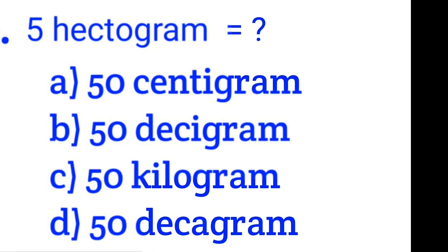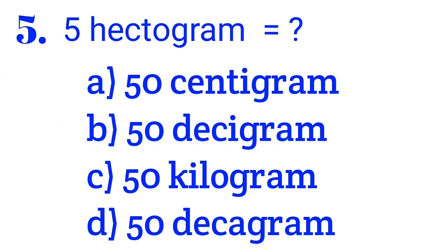Number 5: 5 hectograms is equal to — options are 50 centigrams, 50 decigrams, 50 kg, or 50 dkg. The correct answer follows.